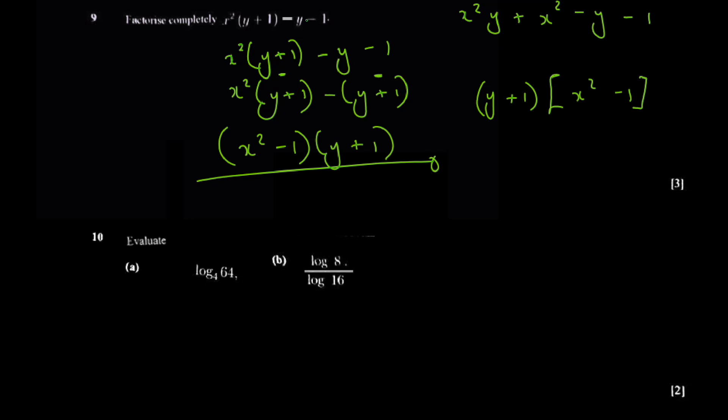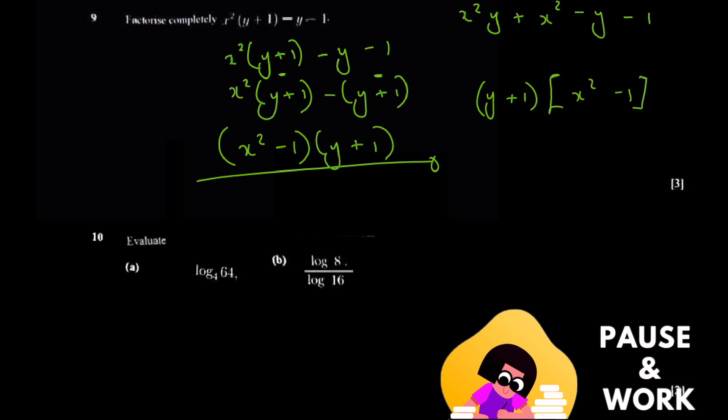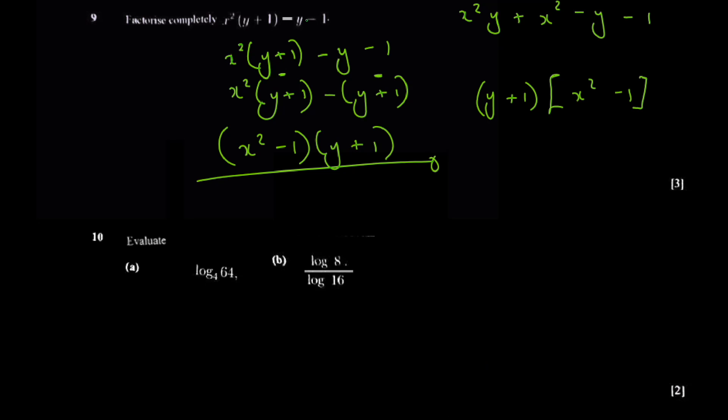Now question 10a says: calculate log base 4 of 64, without using a calculator. There are two ways to go about it. The first, normal method: let log base 4 of 64 equal x. Then you form an equation using the law of logarithms.